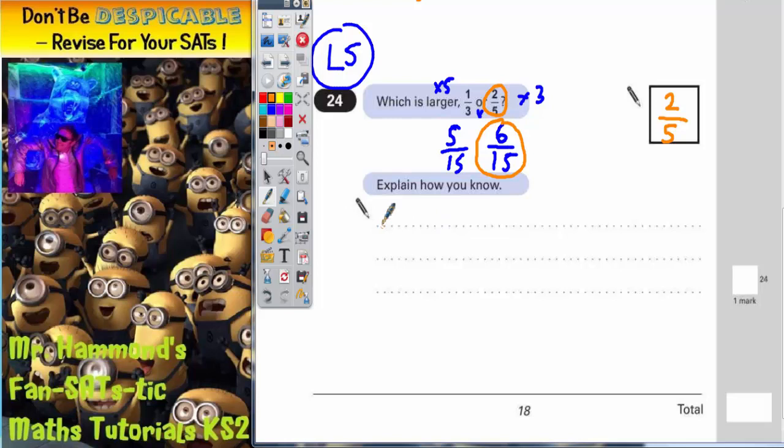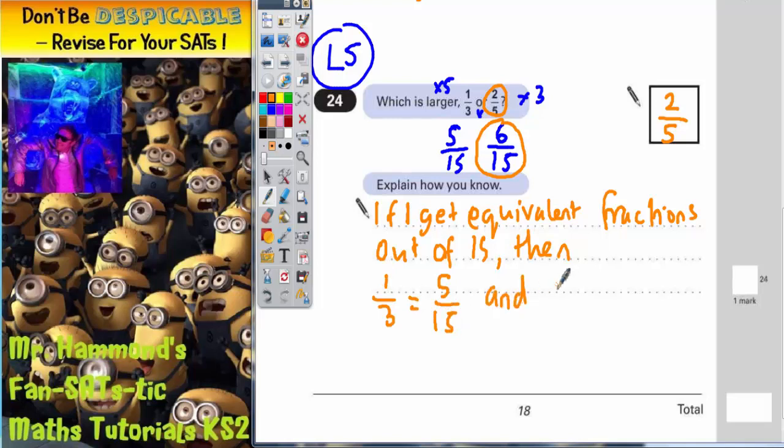So in terms of the explanation, you could say, if I get equivalent fractions out of 15, then 1/3 equals 5/15, and 2/5 equals 6/15. Remember that there we have times by 5, there we have times both things by 3.